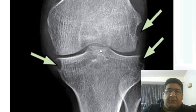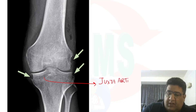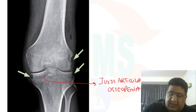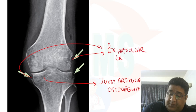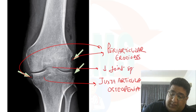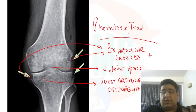The third thing is that the joint space between the femur and tibia has been reduced — that is reduced joint space. So to summarize: the first finding is juxta-articular osteopenia, the second is periarticular erosions, and the third is reduced joint space.